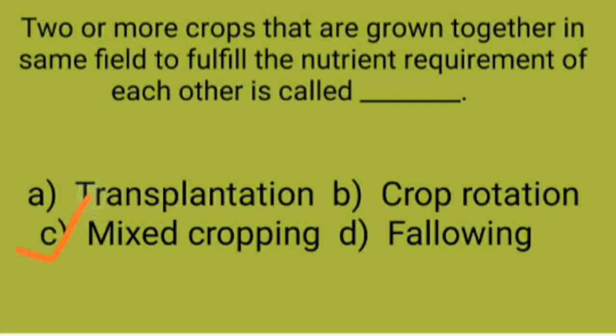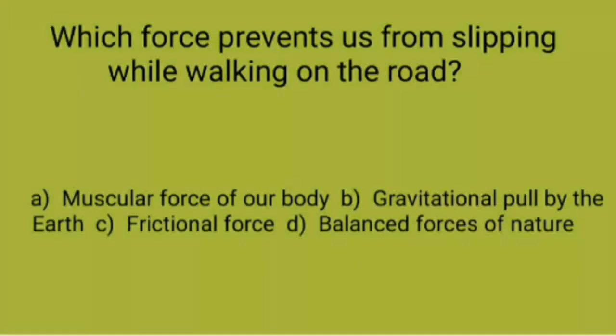Which force prevents us from slipping while walking on the road? A: Muscular force of our body, B: Gravitational pull by the Earth, C: Frictional force, D: Balanced force of nature. Correct option is C, frictional force.